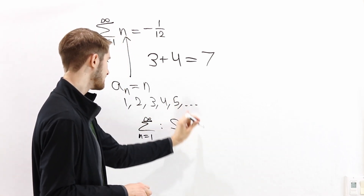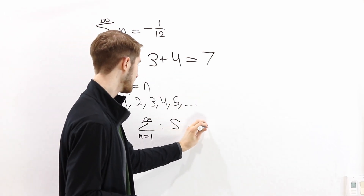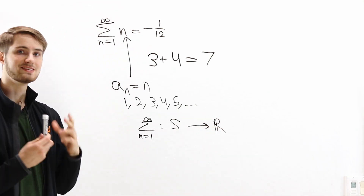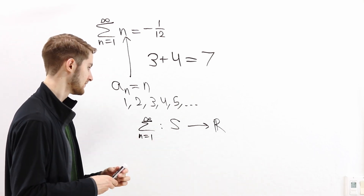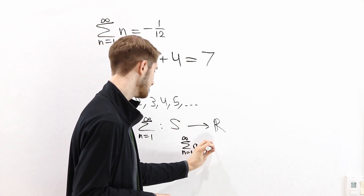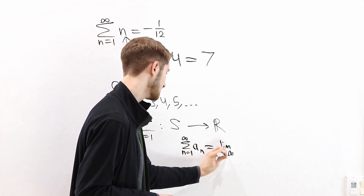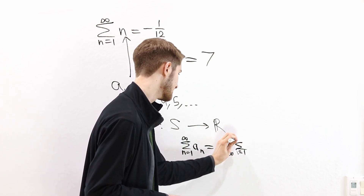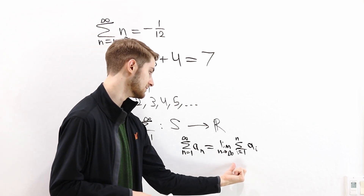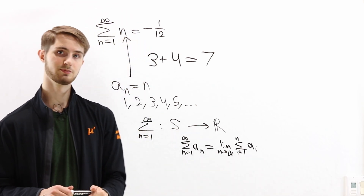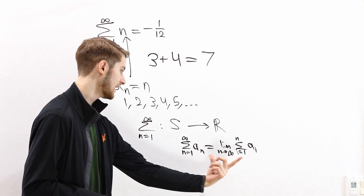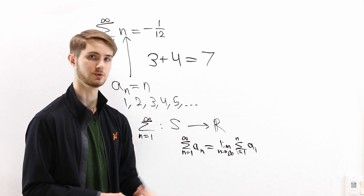This function has a domain, which is some set S — a set of sequences of real numbers. And from this domain it gives us an output in the real numbers. The standard way to define the infinite sum function is to say that the sum from n equals 1 to infinity of some sequence a_n is equal to the limit as n goes to infinity of the partial sum from i equals 1 to n of a_i. So if we want to find an infinite sum, we take the limit as n goes to infinity of the sequence of finite partial sums.